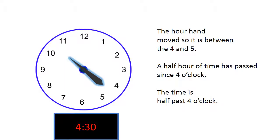The hour hand moved, so it is between 4 and 5. A half hour of time has passed since 4 o'clock. The time is half past 4 o'clock.